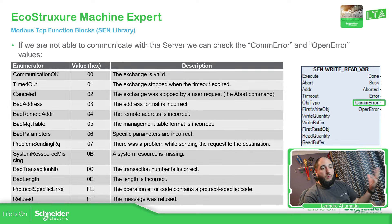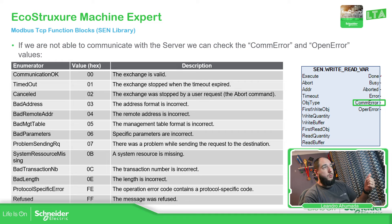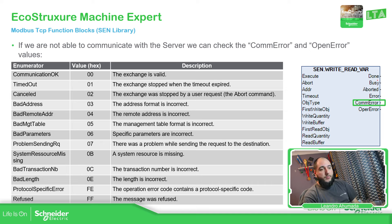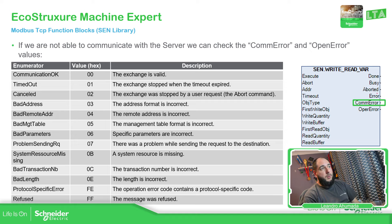We also have the possibility to make diagnostics. As soon as you execute this, you should be able to see the function block is busy. As soon as it finishes and everything is fine, then you should be able to see the Done output go true. If you are stuck on busy for some reason, you have the possibility to use abort and then you should see the Aborted output. If you execute again and receive busy and then error, check the COM error and OPER error outputs.